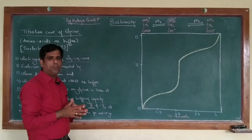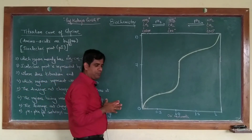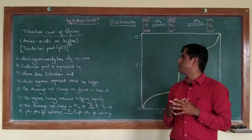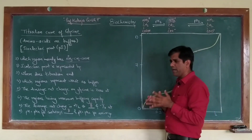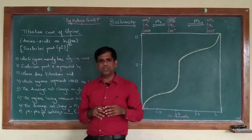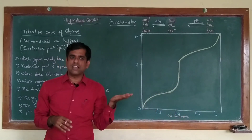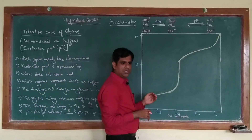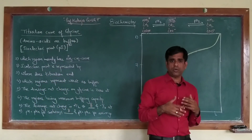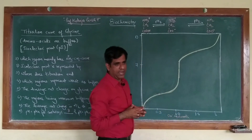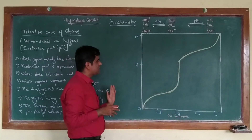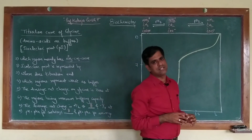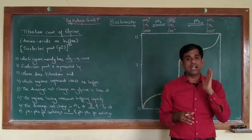Hi friends, today we will be talking about the titration curve of a typical amino acid. We have talked about amino acids in our earlier videos where we have seen that a typical amino acid comprises both amino as well as the carboxyl group. Now when these amino acids are titrated with, say for example, NaOH, there is a deprotonation of these particular amino acids. Here we will be talking about a simple titration curve of the simplest amino acid in the series, which is glycine.